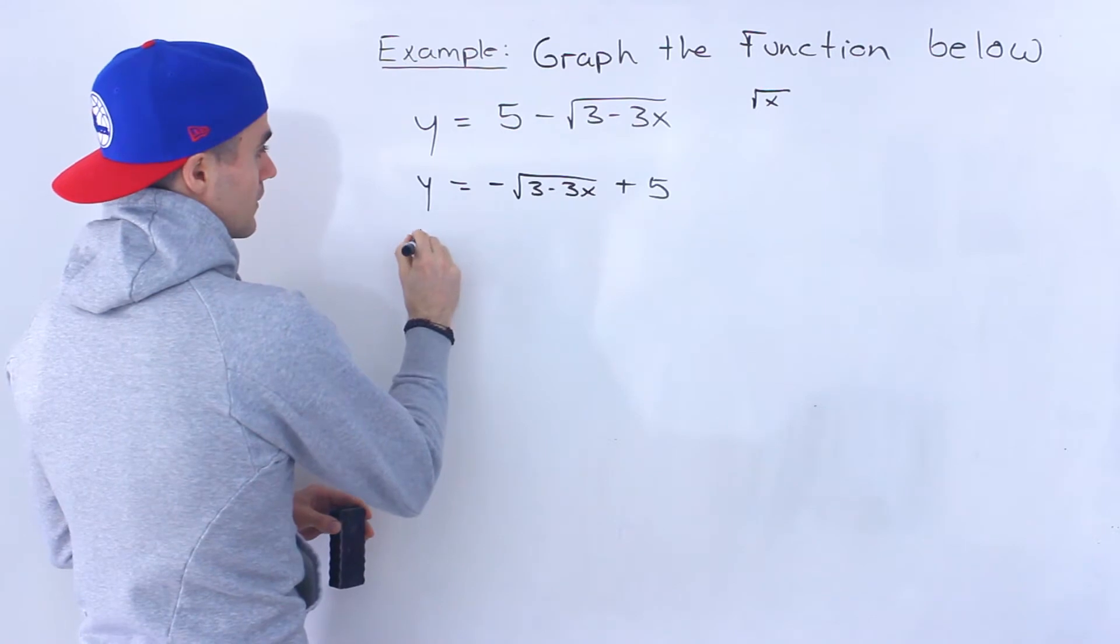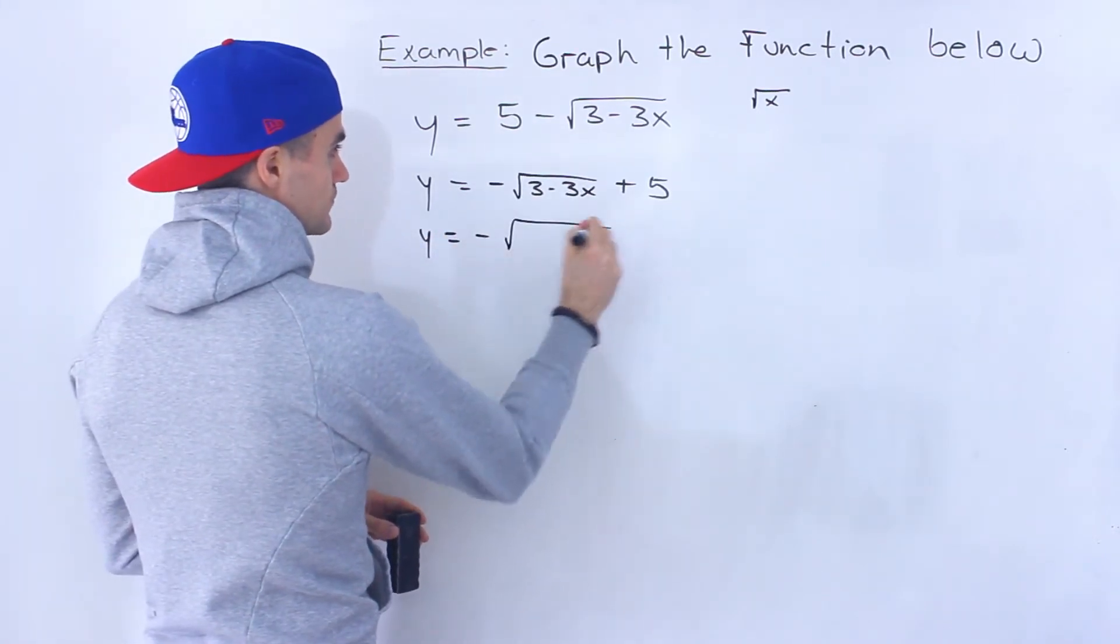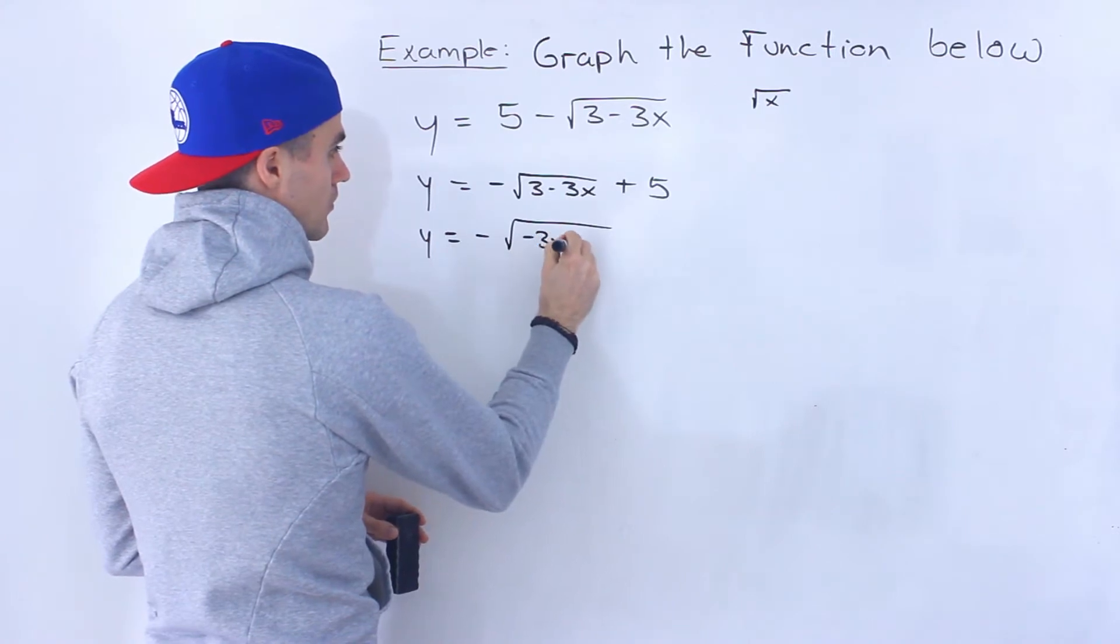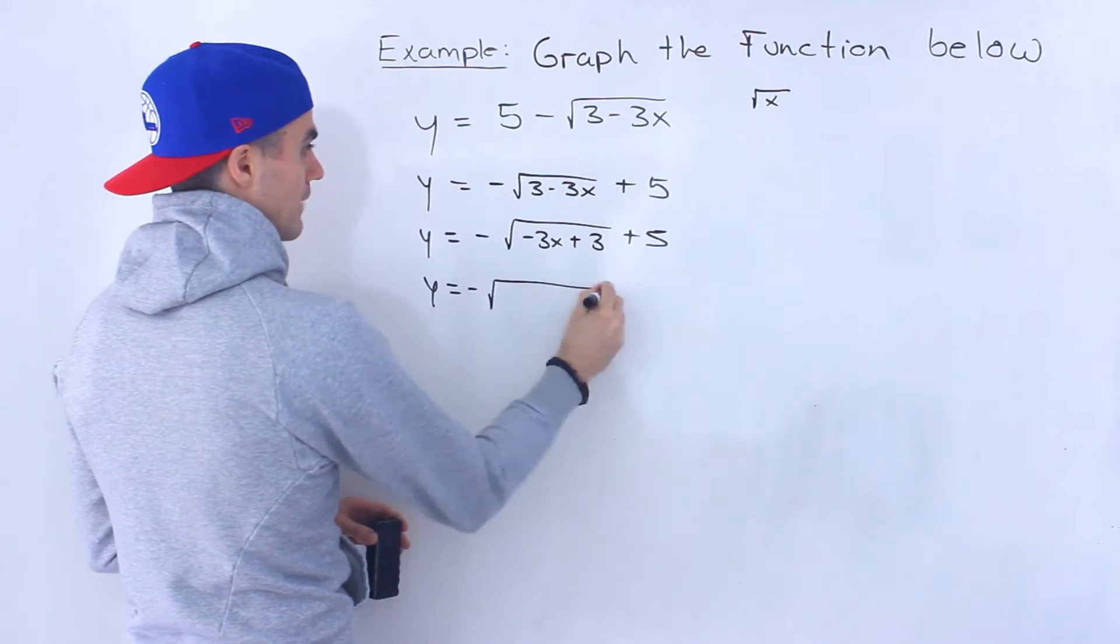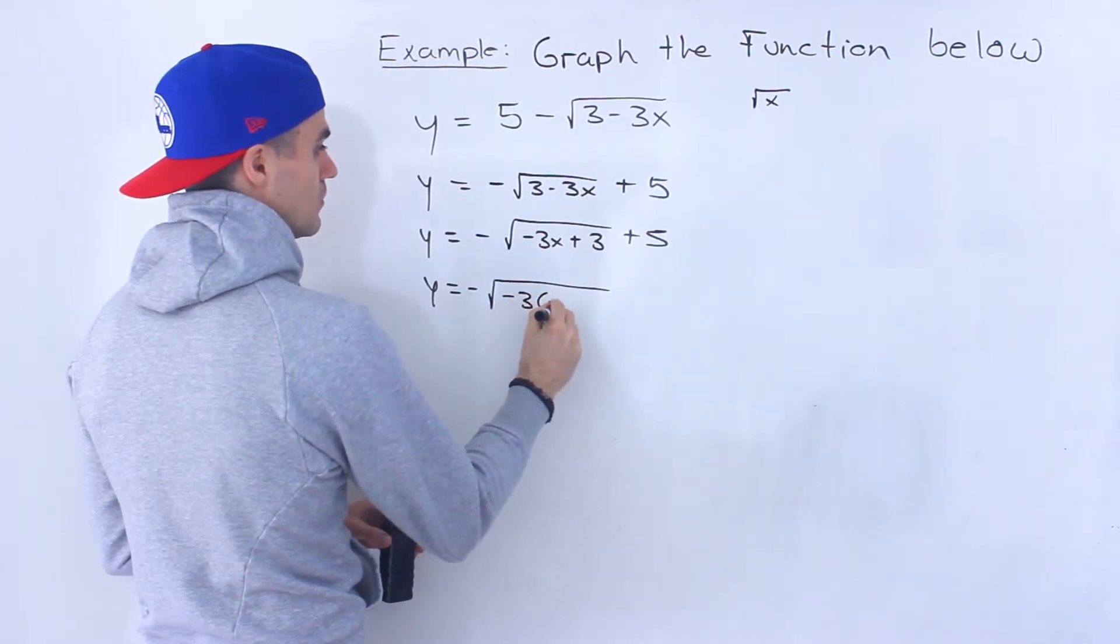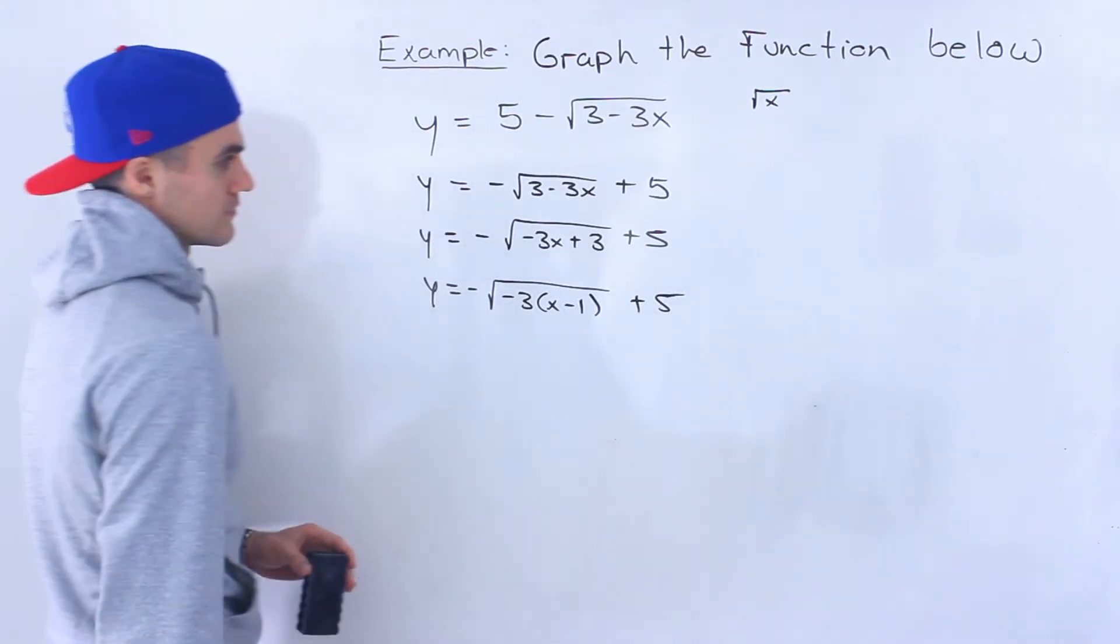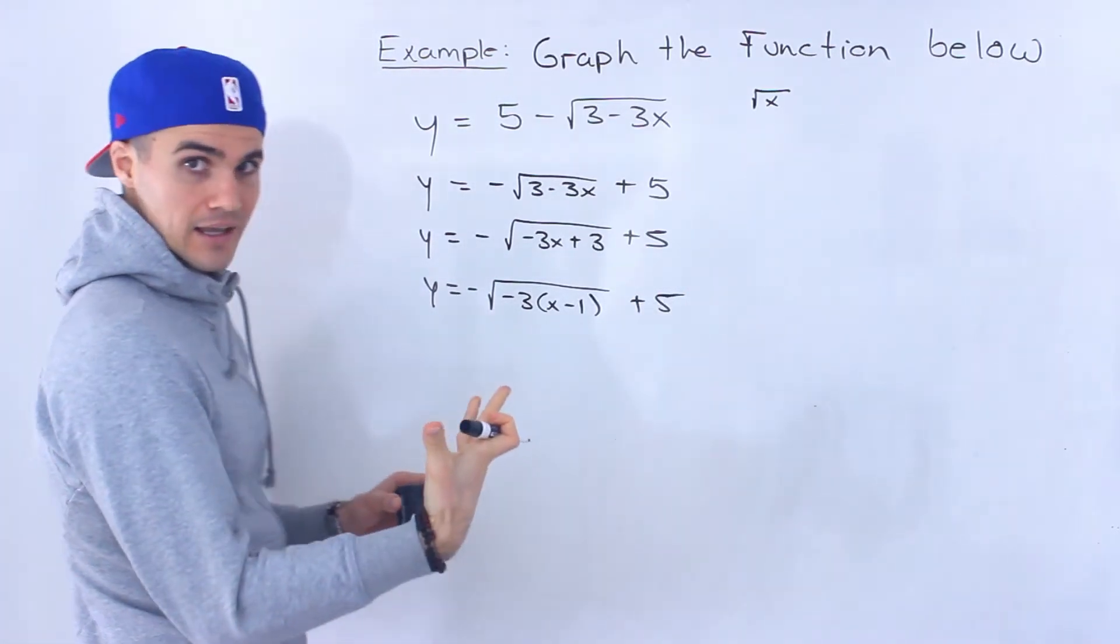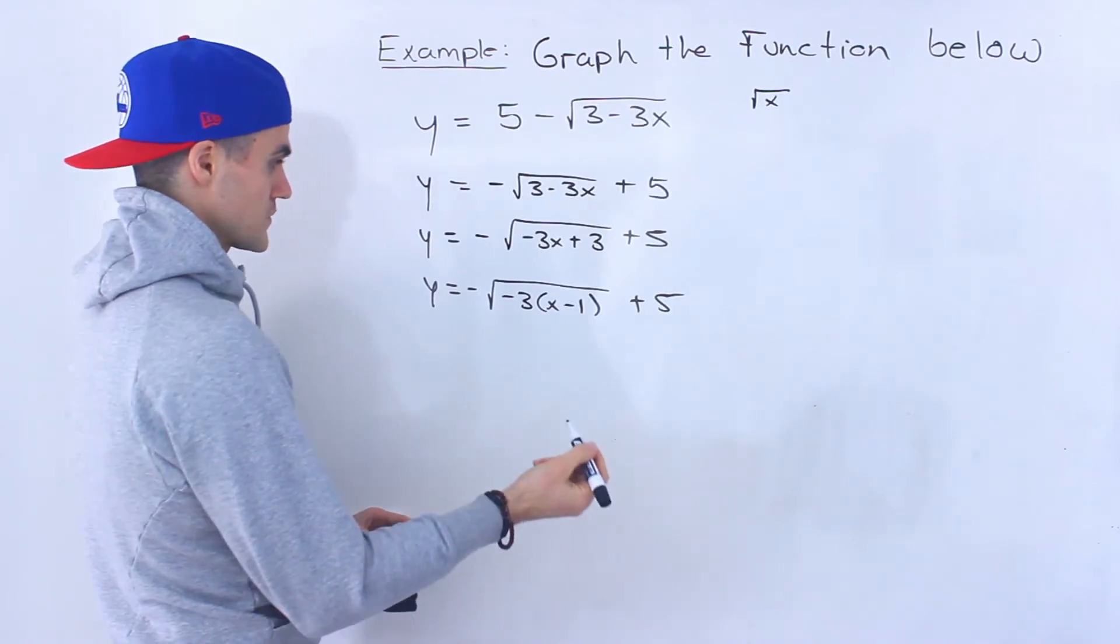From here, notice that this square root, we can rearrange this. And remember, we want to have that k value by itself. Now we got it in that nice transformation format, that general transformation format.